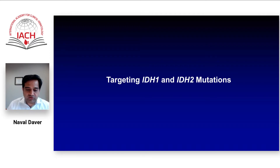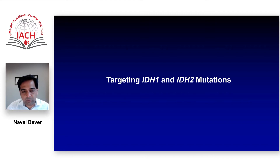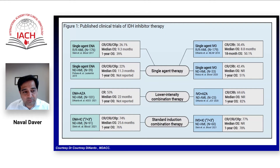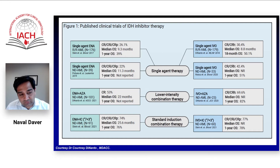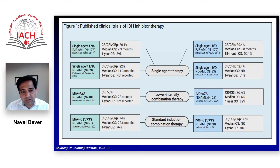Now moving towards IDH, which is not as common as FLT3. FLT3 was about 30–35% of all newly diagnosed AML; IDH is about 15–18%, but still a sizable group of patients. Looking at response rates with single agent as well as combination IDH inhibitors — with single agent IDH inhibitors, remission rates were about 30% in relapsed/refractory IDH-mutated AML, and that is actually how these drugs were approved by the FDA. However, when you combine azacitidine with an IDH inhibitor, that significantly improves the response rate, almost doubling to about 60%.